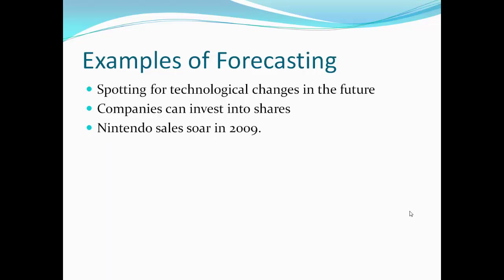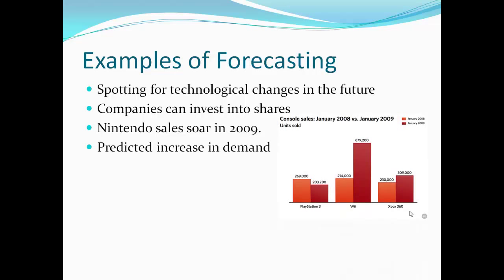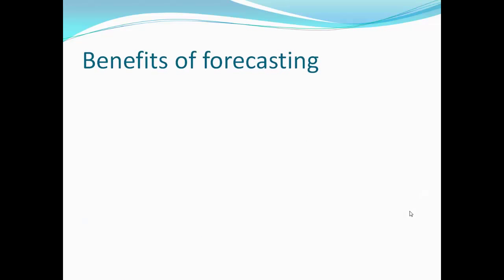The old TV market completely crashed. If a business is going to invest in shares, they could research and forecast which companies to invest in. A good example of forecasting sales was Nintendo when they released the Nintendo Wii. They forecasted a dramatic amount of sales and within 3 years sold 6 million consoles, with the majority of sales in 2009, as you can see in this diagram. These sales were predicted and helped Nintendo dramatically as they kept supplying units to customers, maintained sales, and gained more profit.